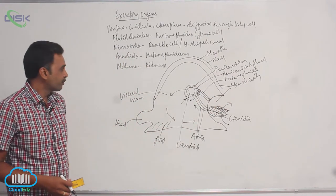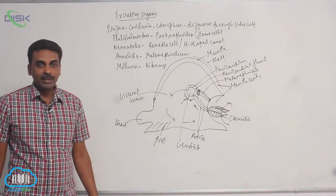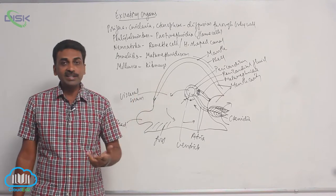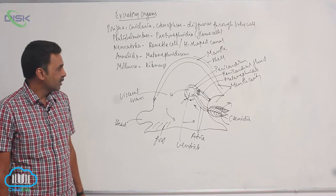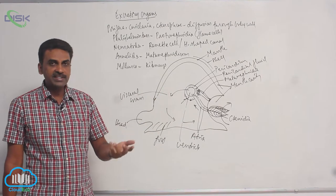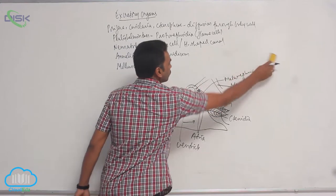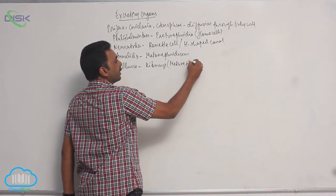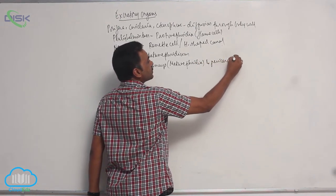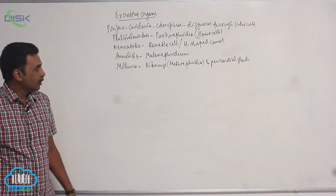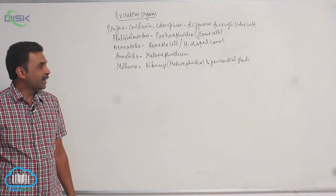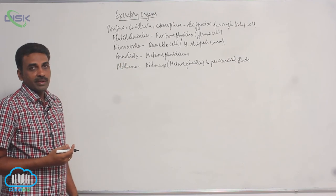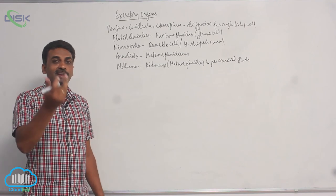From the coelomic fluid, the metanephridia collect the waste and push it into the mantle cavity through the nephridial pore. These are commonly called kidneys, but structurally they are metanephridia - do not confuse them with the kidneys of vertebrates, as both are structurally different. So molluscs have pericardial glands and kidneys, where the kidneys are actually metanephridia. In annelids and molluscs, adults have metanephridia, but in larval stages of polychaetes there is protonephridia.